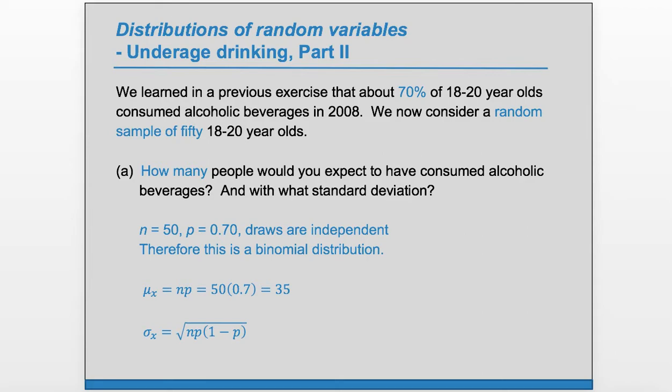And for sigma, we'll do square root of np(1-p). And we plug those numbers in and we get 3.24. Again, using these shortcut formulas is really convenient because otherwise, especially standard deviation to find it from scratch is very tedious.